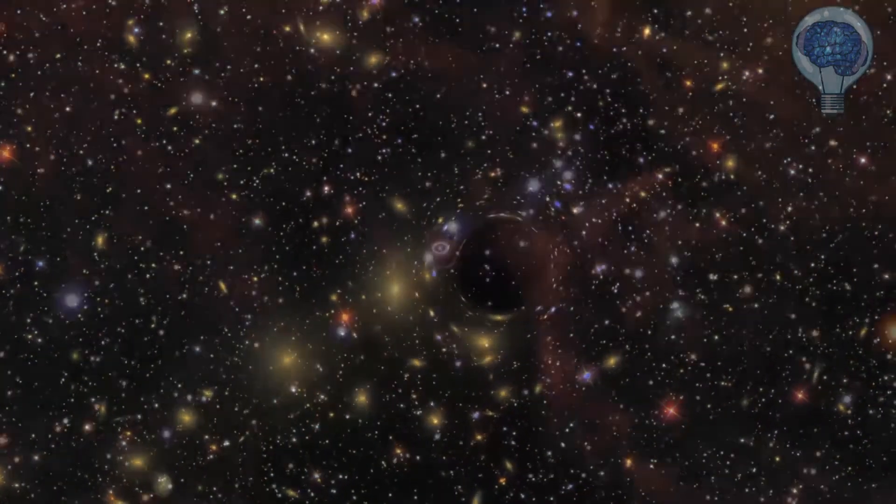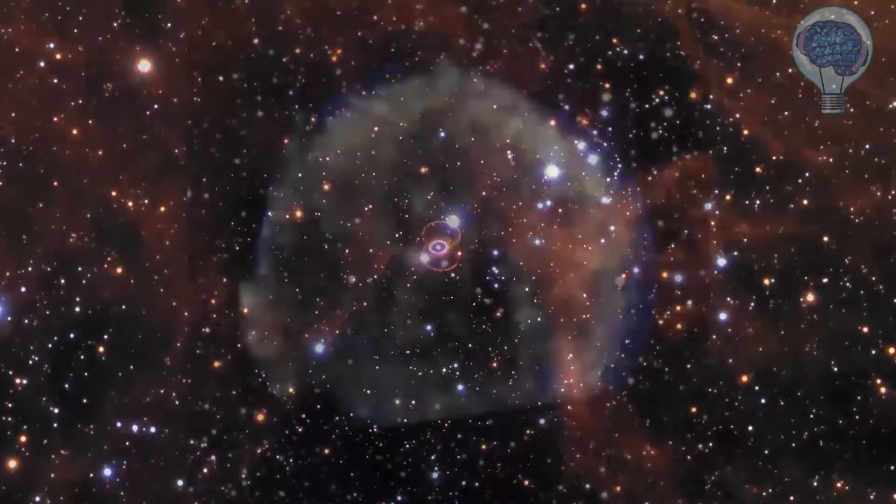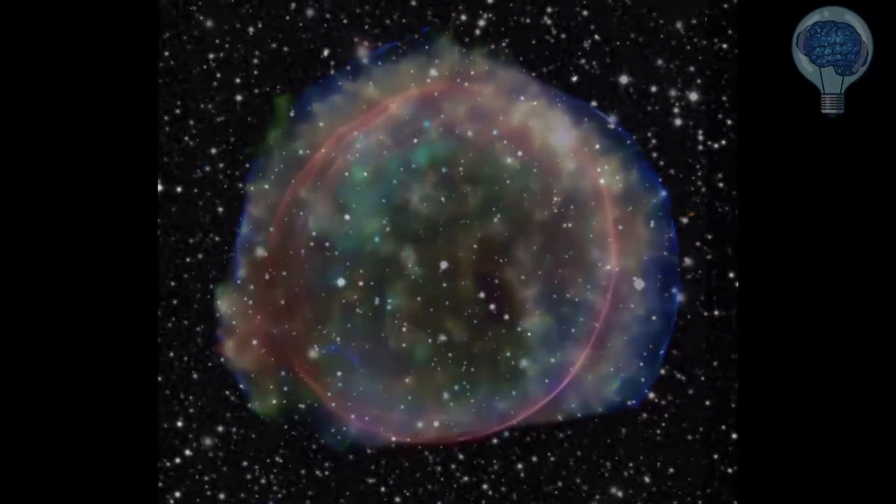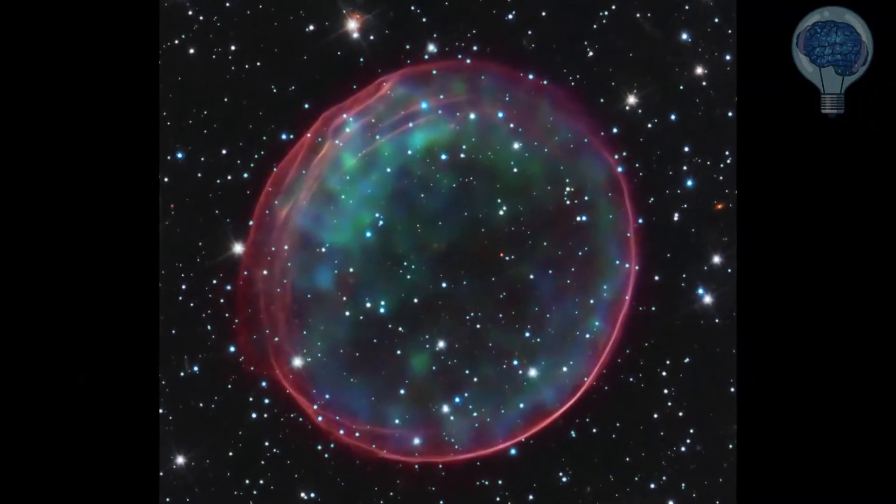Astronomers actually haven't seen as many supernovas occur with the largest stars as they would expect to see, and they've been wondering why this is. Perhaps 10-30% of massive stars don't go supernova, and they're still able to simply form a black hole.